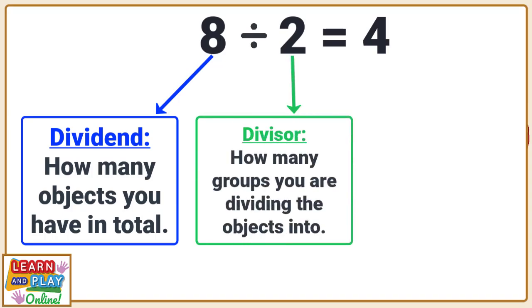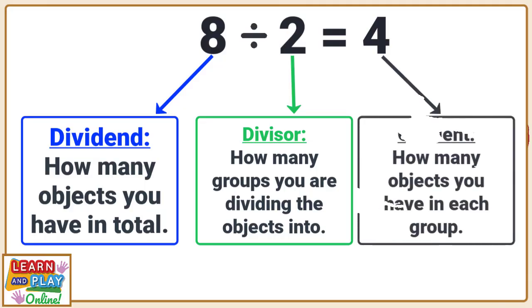The second number is called the divisor. It tells you how many groups you are dividing the objects into. The answer is called the quotient. It tells you how many objects you have in each group once they have been shared.